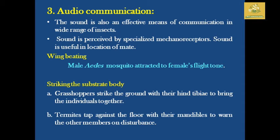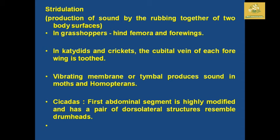Stridulation is the production of sound by rubbing two body surface edges together, occurring mainly in grasshoppers where the hind femur and forewing interact. In field crickets, the cubital vein of each forewing is toothed. Vibrating membranes or tymbals produce sound in moths, homopterans, and cicadas, where the first abdominal segment is highly modified and has a pair of dorsal structures resembling drumheads.